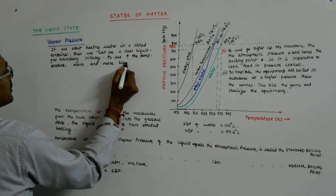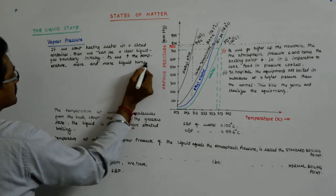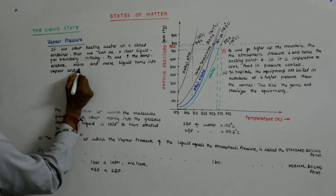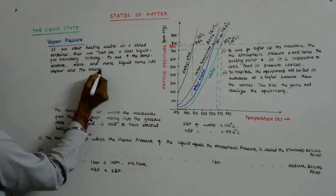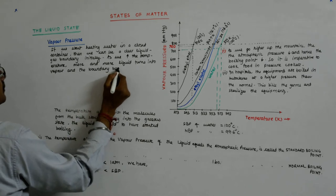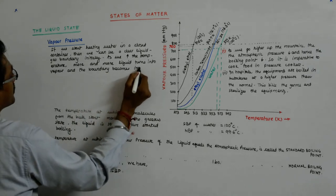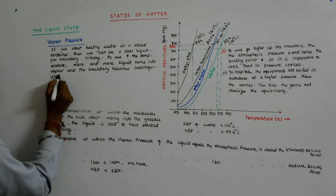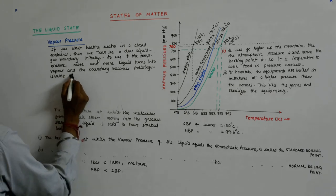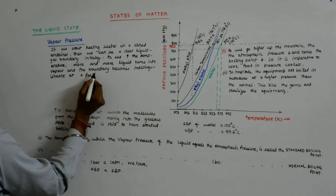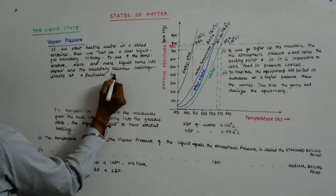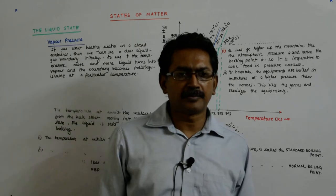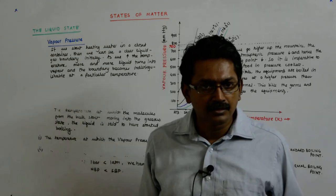The boundary becomes indistinguishable at a particular temperature. Below this temperature, the liquid will suddenly appear, and above it, it's all gas. This temperature is called the critical temperature.